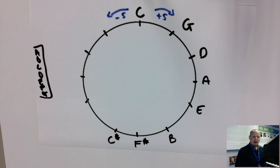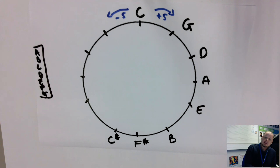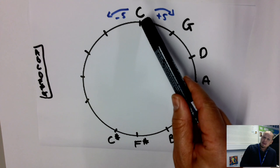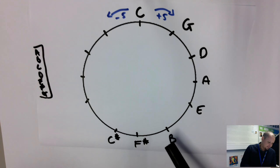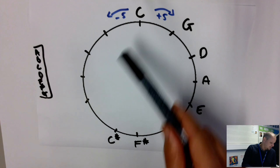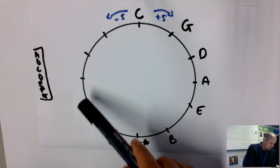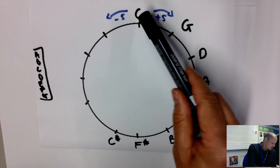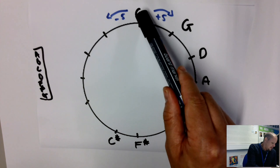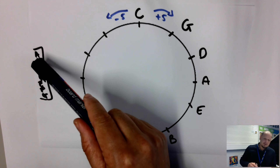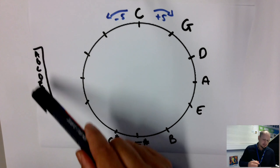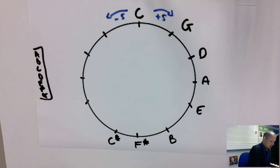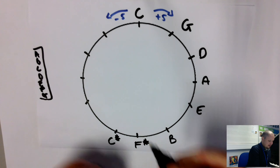Now for the flat keys, we're going to go anti-clockwise, minus five, going backwards. From C going backwards: C, B, A, G, F — so our first key with just one flat is F major.